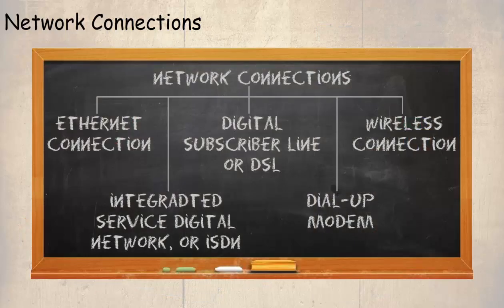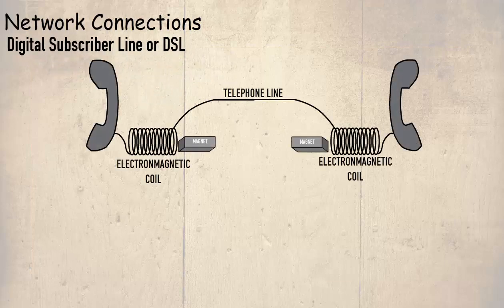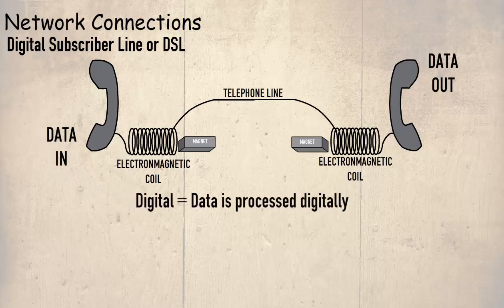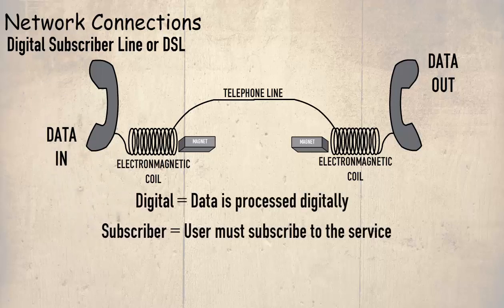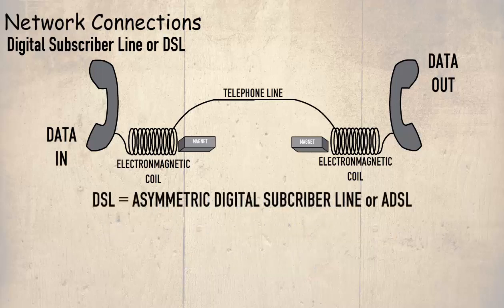The next connection is called Digital Subscriber Line, or DSL. Digital Subscriber Line is a family of technologies that is used to transmit data over the telephone lines. Digital means that the data is processed digitally. Subscriber means that in most cases the user must subscribe to the service, and line normally means the telephone line. In telecommunication marketing, DSL is widely understood to mean Asymmetrical Digital Subscriber Line, or ADSL, the most common installed DSL technology for internet access, once again using the multiplexing technique.